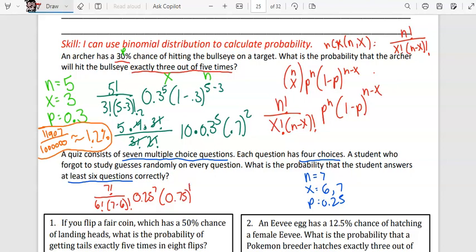And then we'll add the other one with x being 7. We have 7 factorial over 7 factorial times 7 minus 7 factorial, times 0.25 to the 7th power, times 0.75 to the 0th power.